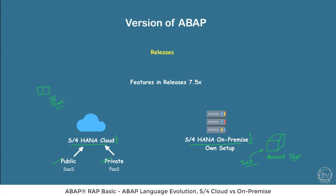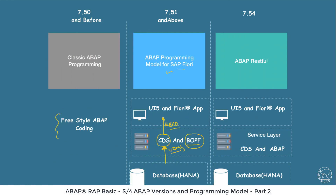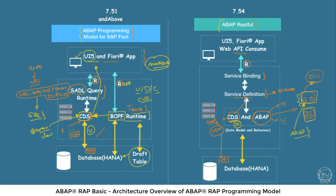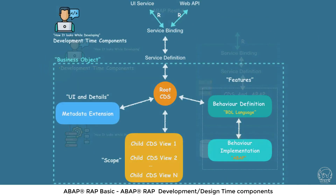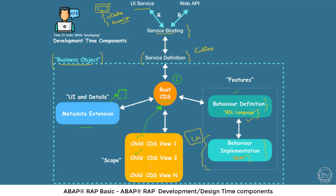In this course, we will start with giving you a basic understanding of how the on-premise and cloud systems are structured and how ABAP has evolved with different on-premise and ABAP systems. Then we go into a comparison between the previous SAP FURY programming model and the current SAP RAP programming model, from the architectural point of view and also the development-time and runtime component aspects.